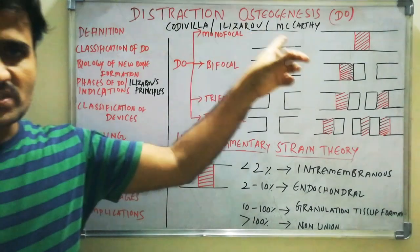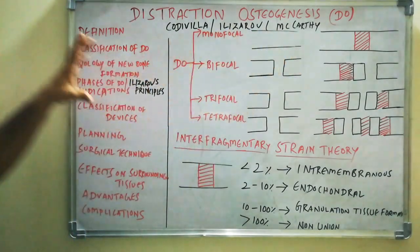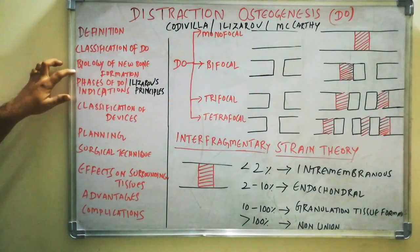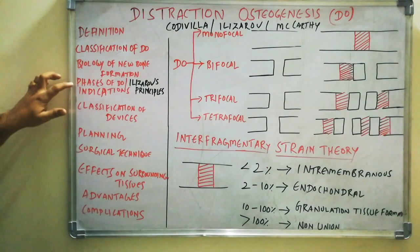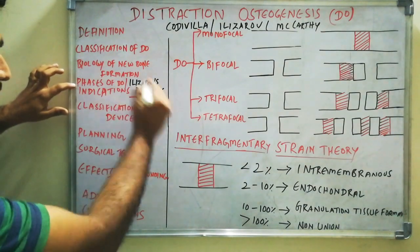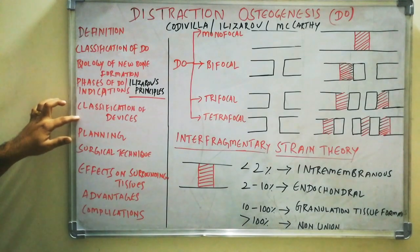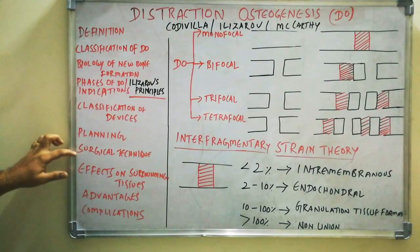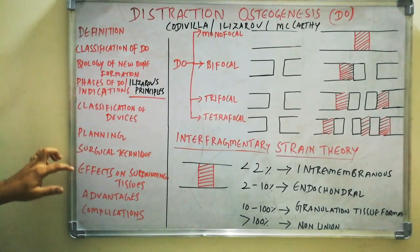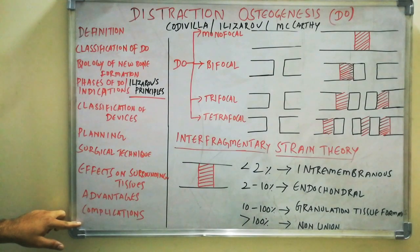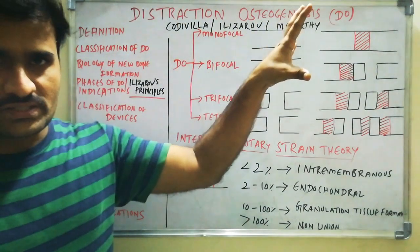We will discuss this topic covering: definition and classification of DO, biology of new bone formation, phases of DO (Ilizarov's principles, most important), indications, classification of devices used for distraction and planning, surgical technique, effects on surrounding tissues, and advantages and complications.